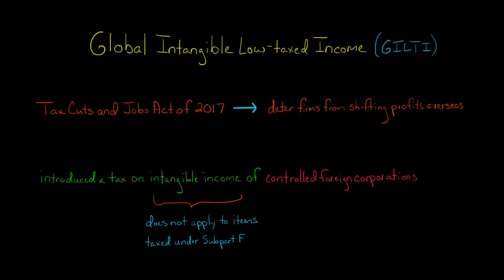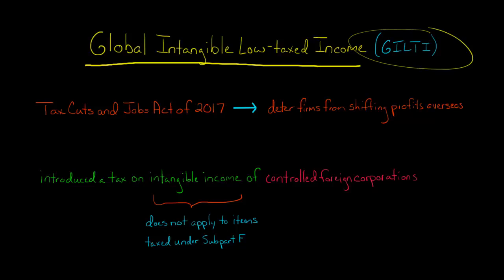In this video, we're going to discuss global intangible low-taxed income, which is commonly known as GILTI. The Tax Cuts and Jobs Act of 2017 was tax reform in the United States. One of the things that Congress wanted to do is to prevent U.S. companies from shifting their profits overseas using intellectual property.